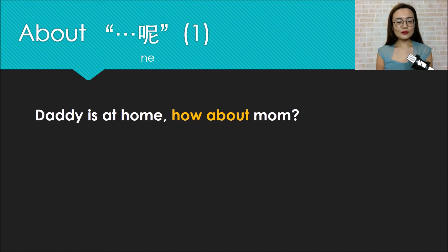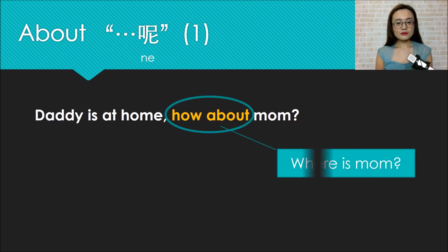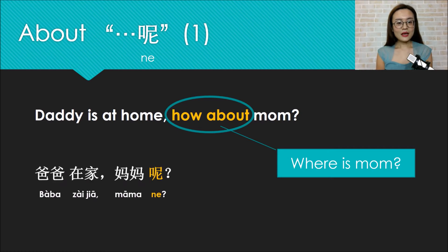Okay, another example. Look at this sentence: Dad is at home. How about mom? Here, how about means where is mom, right? So how do you ask this question? Yes, we use ne. Baba zai jia, mama ne?